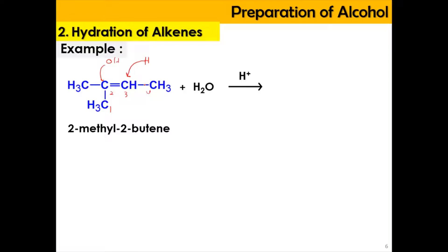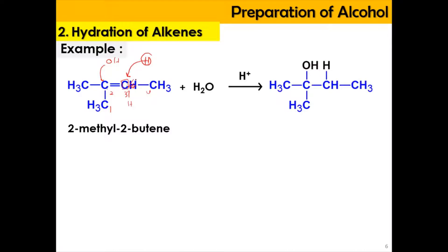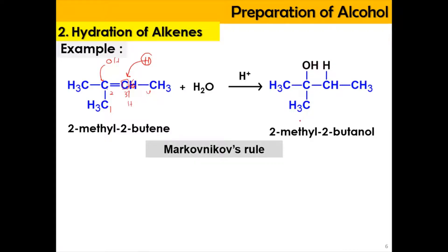The same principle you learned in alkene is applicable here — we have to follow Markovnikov's rule. Hydrogen needs to be inserted to the carbon attached with the greatest number of hydrogens. In this case, carbon number 3 is attached with 1 hydrogen, but carbon number 2 has no hydrogen. So hydrogen is inserted at carbon number 3, producing 2-methyl-2-butanol, with OH inserted at carbon number 2.